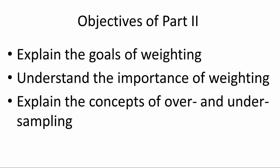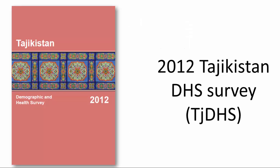While we will be explaining weighting concepts using numbers and math, there is no need for DHS users to be doing these calculations on their own. Similar to Part 1, we will be using the 2012 Tajikistan Demographic and Health Survey as an example throughout the video. You can follow along using the 2012 Tajikistan DHS as a reference, and find a free PDF copy at www.dhsprogram.com by clicking on the Publication tab and searching for Tajikistan.